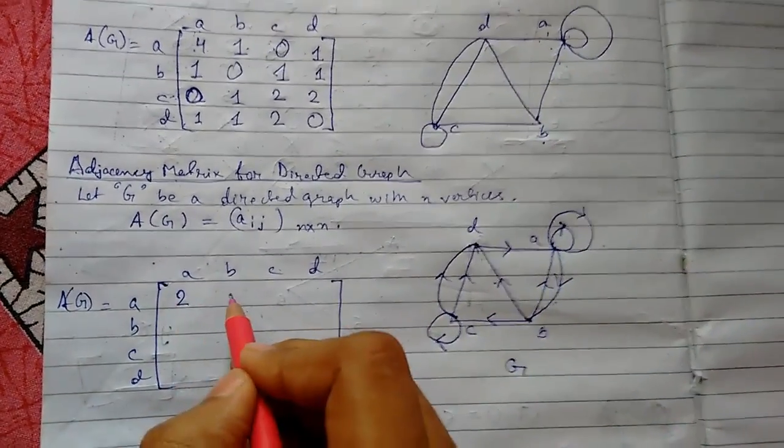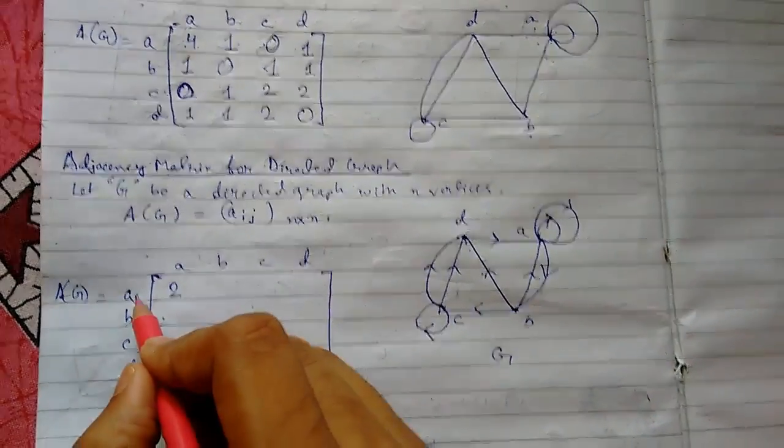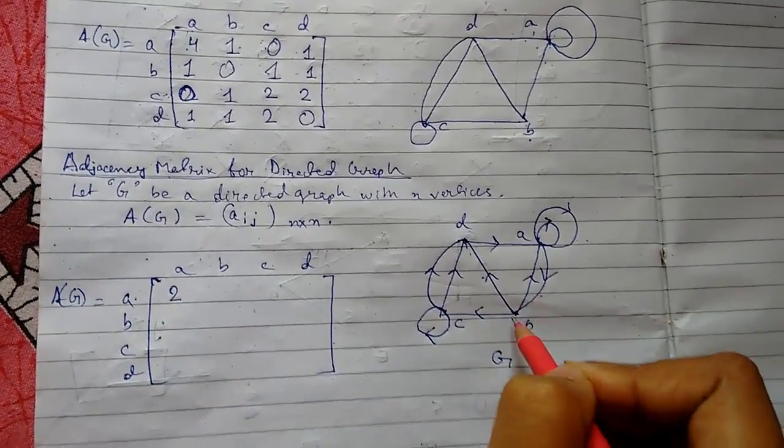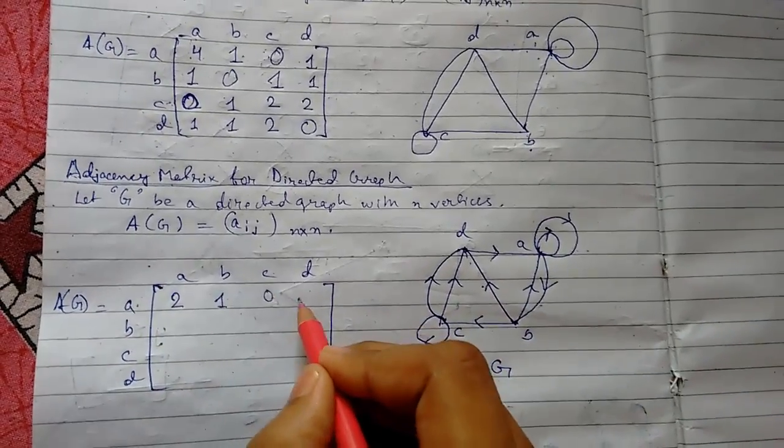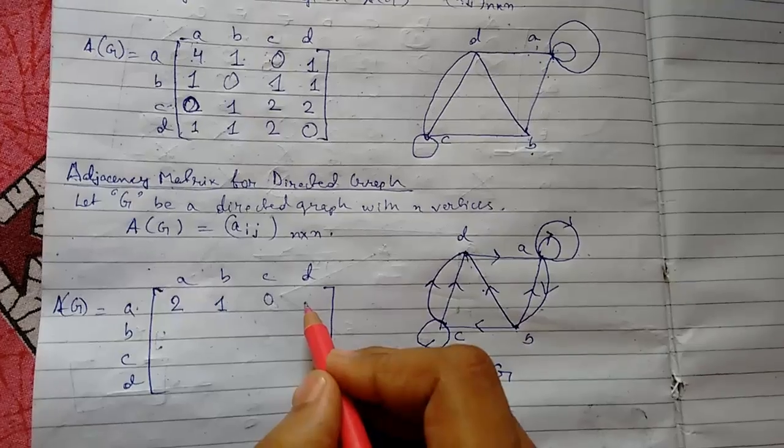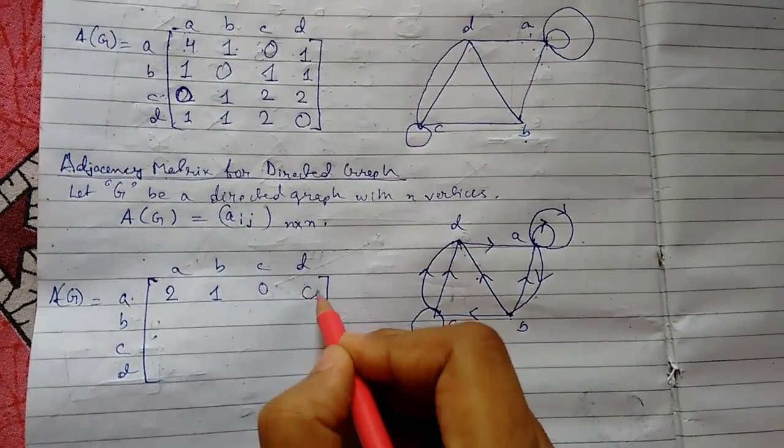Now a to b, is there a path? Yes, only one path. This path follows the direction of arrow from a to the terminal b. Now a to c, there is no path, and from a to d there is no path.